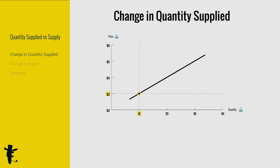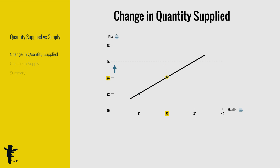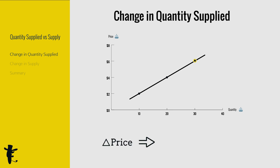In the supply curve, when price increases from $2 to $4, quantity increases from 10 to 20. From $4 to $6, quantity increases from 20 to 30. The dot just moves along this curve. In econ speak, this movement is called change in quantity supplied. When price changes, we say there's a change in quantity supplied.